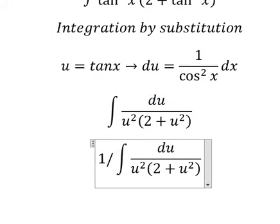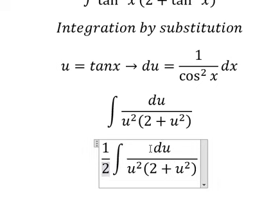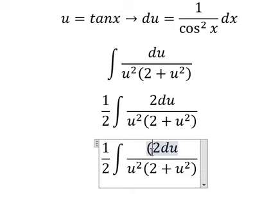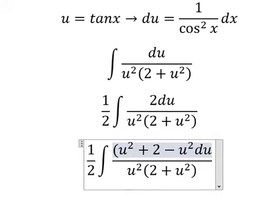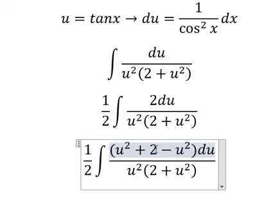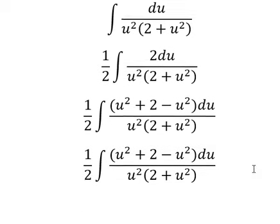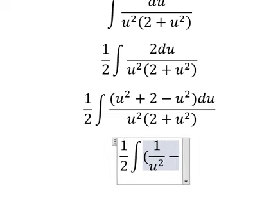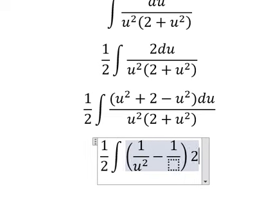We need to put one over two. We place number two here so that we have u squared and u squared. The reason we have number two is because on the denominator we have number two. This gives us u squared plus two, divided by two plus u squared — u squared divided by u squared — and now we get the expression one over u squared minus one over two plus u squared.